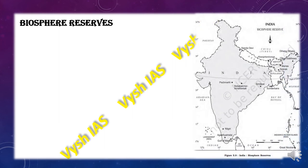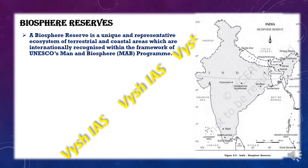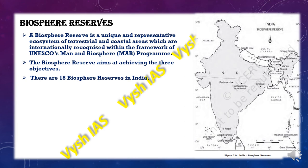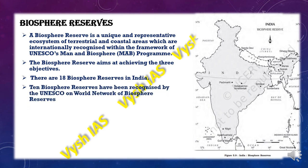This is the main important topic of the chapter, as questions are formed from it every year. A biosphere reserve is a unique and representative ecosystem of terrestrial and coastal areas, internationally recognized within the framework of UNESCO's Man and Biosphere program. It creates an environment where animals can stay healthy and their populations can increase. There are 18 biosphere reserves in India and 10 have been recognized by UNESCO on the World Network of Biosphere Reserves.